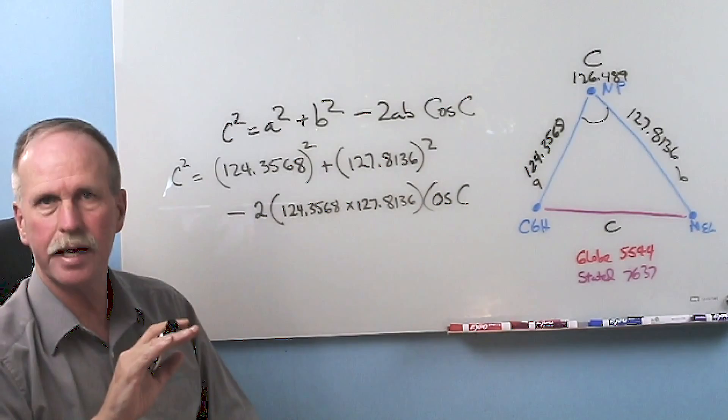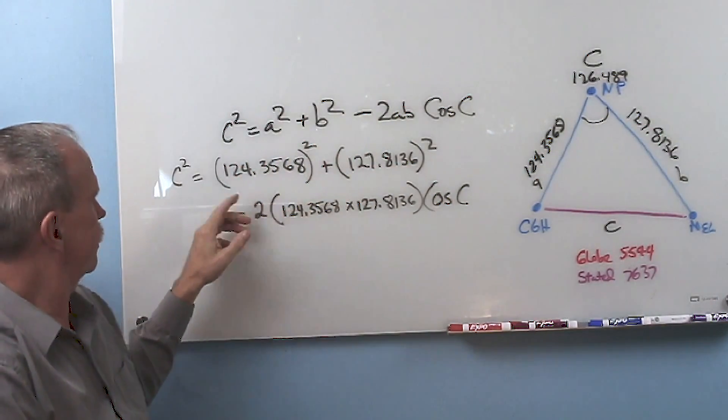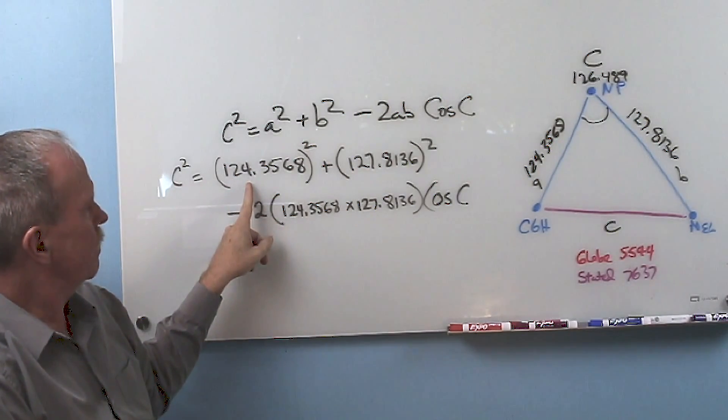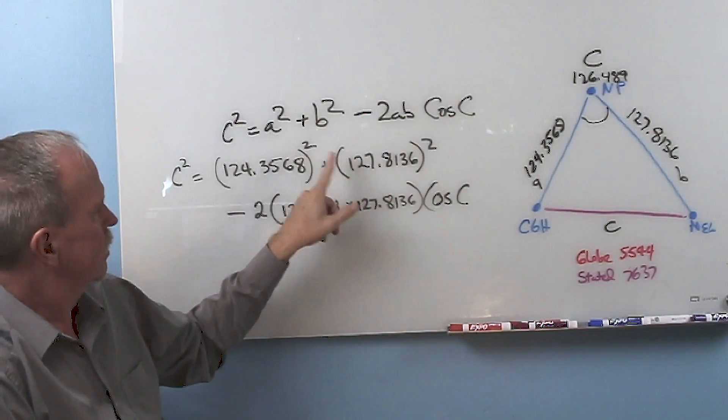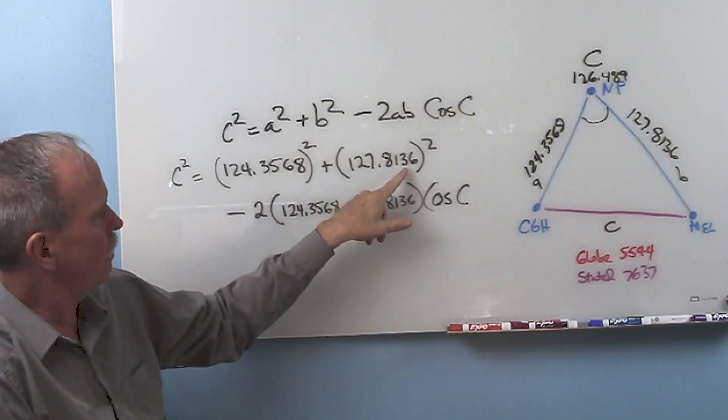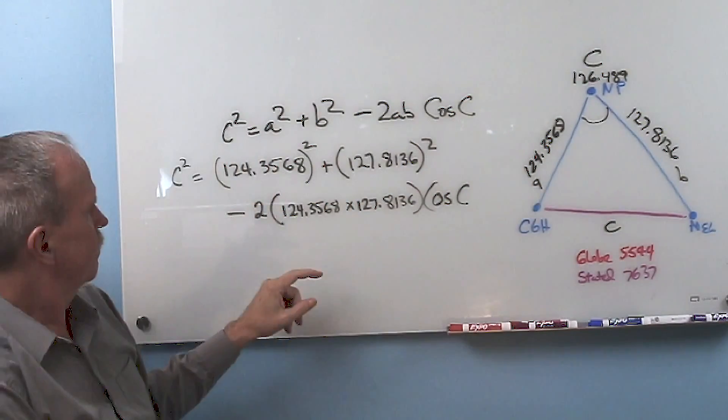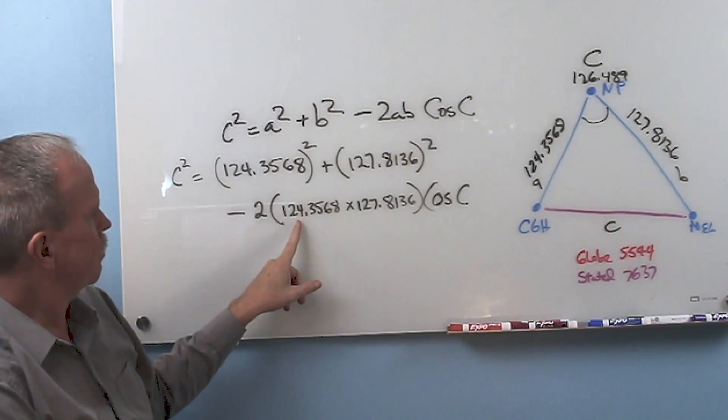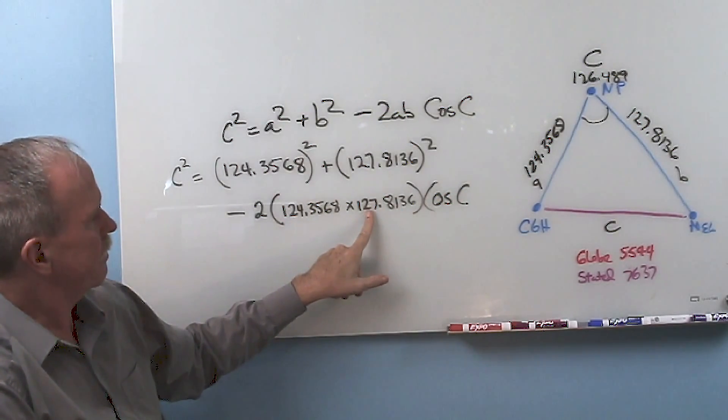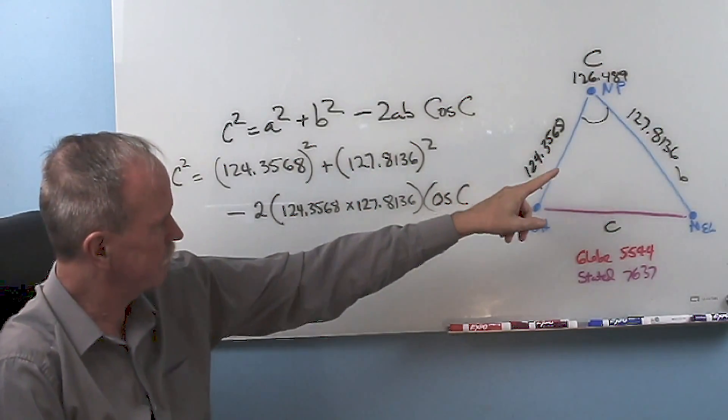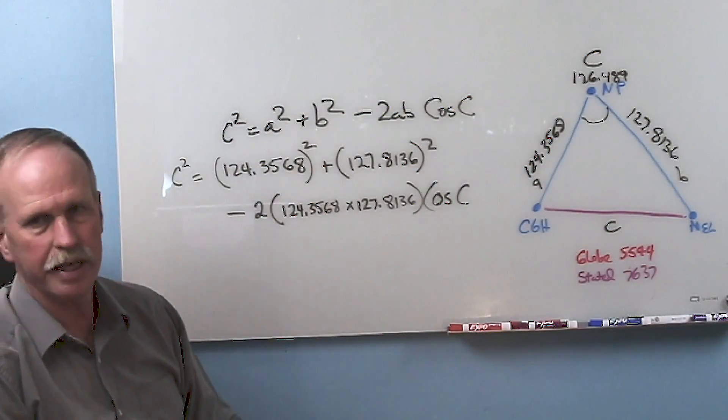Now you can read these right off the triangle with me. Here's the original formula, and let's plug our numbers in. So c squared equals 124.3568 from right here, that's a squared, plus 127.8136 squared, which is side b, minus 2 times 124.3568 from here, times 127.8136 from there, times the cosine of angle C. Let's see what that gives us.